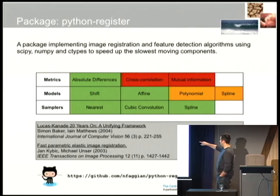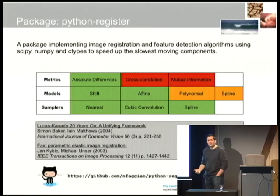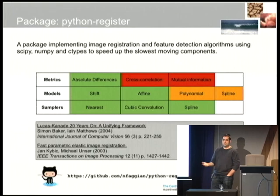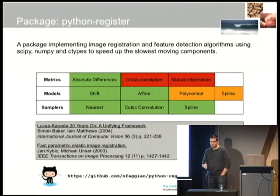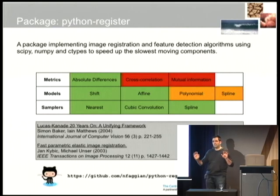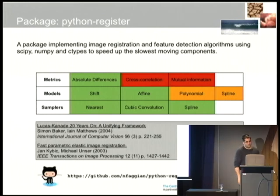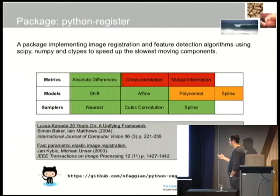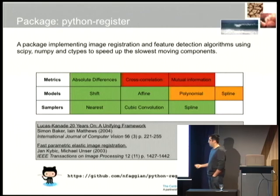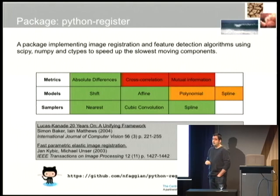The two papers really driving development are probably the seminal image registration papers. If you're interested in understanding image registration, I strongly recommend the Baker and Matthews paper — it's a five-part series, which is a little bit scary, but just reading the first paper gives an impression of how complex the process can be. Please follow the project on GitHub.